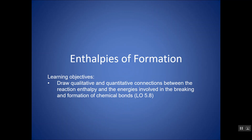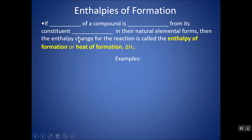In this video, we're going to look at enthalpies of formation, which is another way that you can calculate delta H, or heat of reaction, for a reaction. So if one mole of a compound is formed from its constituent elements in their natural elemental forms, then we call the delta H for that reaction the enthalpy of formation, or the heat of formation. We give it a delta H with a little subscript of F — that's what that F stands for: formation.